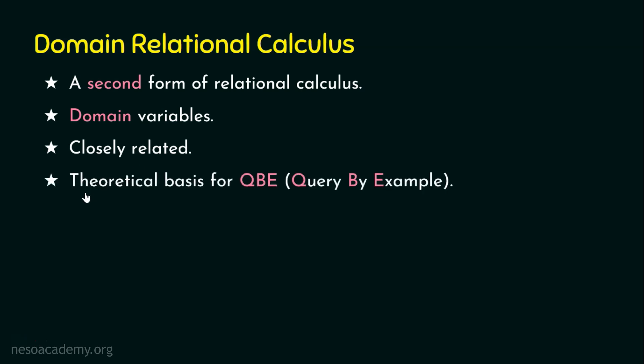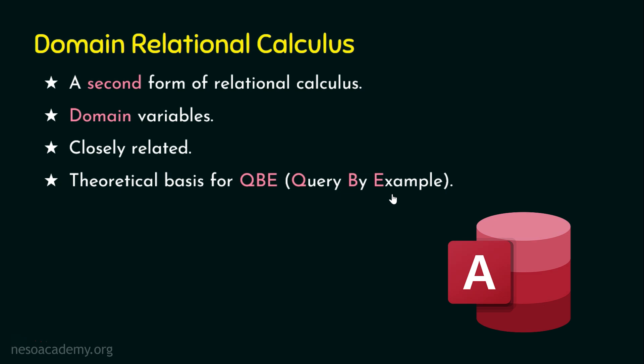Domain relational calculus is the theoretical basis for QBE — Query by Example. QBE is one of the database query languages for relational databases and is the first graphical query language. Originally it was developed for retrieving data from the database, and later it was extended to insert, delete, or update data, and even to create a temporary table. A well-known example that uses QBE is Microsoft Access, where queries are supplied as commands and the output is graphical.